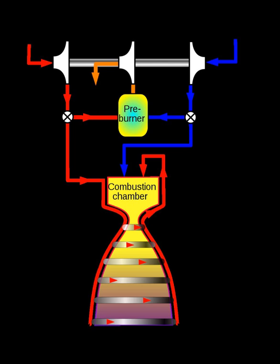However, there are forms of the gas generator cycle that recycle the exhaust into the nozzle of the rocket engine. This is seen in the F-1 rocket engine used on the Saturn V booster stage.